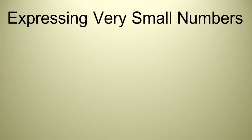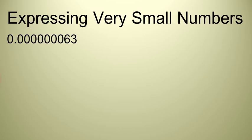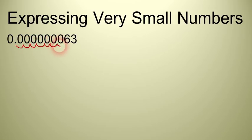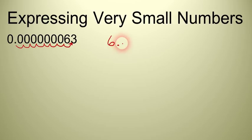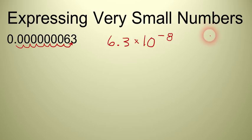We can also use scientific notation to talk about very small numbers. Let's say we have this number: a decimal point followed by a bunch of zeros, then six, three. Those zeros start to run together and it's a hard number to read. We're going to take that decimal point and move it so that the number is in between one and ten. This time we move the decimal point to the right: one, two, three, four, five, six, seven, eight — eight places to the right. That gives us 6.3 times 10 to the negative eighth. We have a negative exponent when we have a very small number.